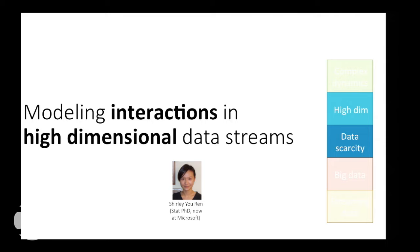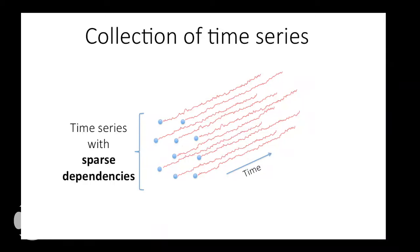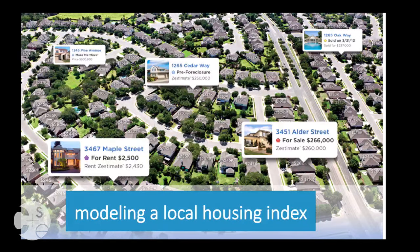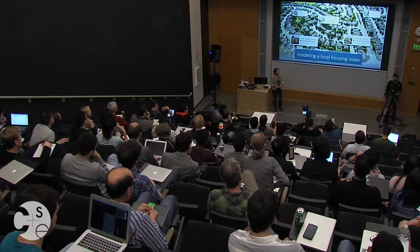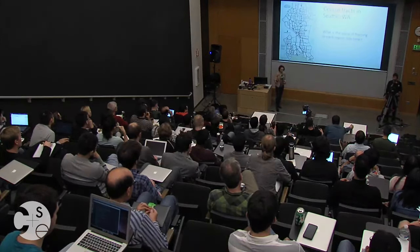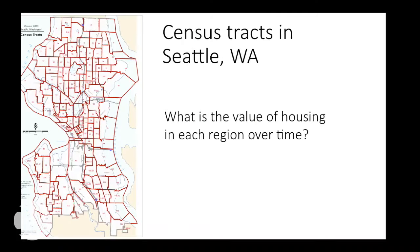The first project I'm going to describe was led by my past student Shirley. We imagine having a large collection of data streams and assume that out of all possible interactions amongst these streams, only a sparse subset are actually exhibited. To motivate this, let's look at an application of modeling a local-level housing index — a collaboration my group has had with Zillow. The goal is to estimate the value of housing at really local levels like a census tract, and estimate how that value changes over time. Policymakers, mortgage lenders, and consumers are all interested in these types of housing indices.